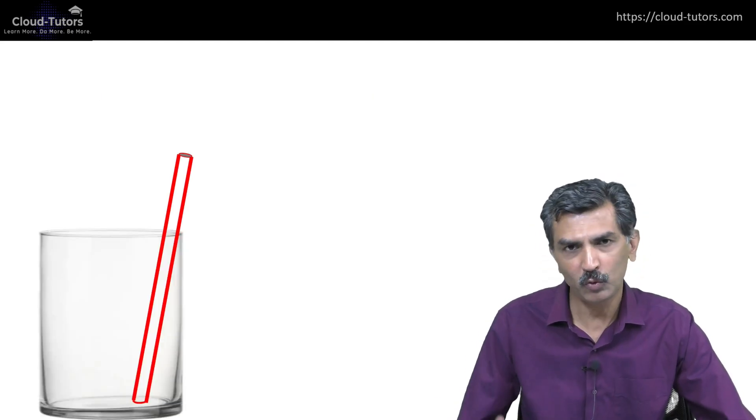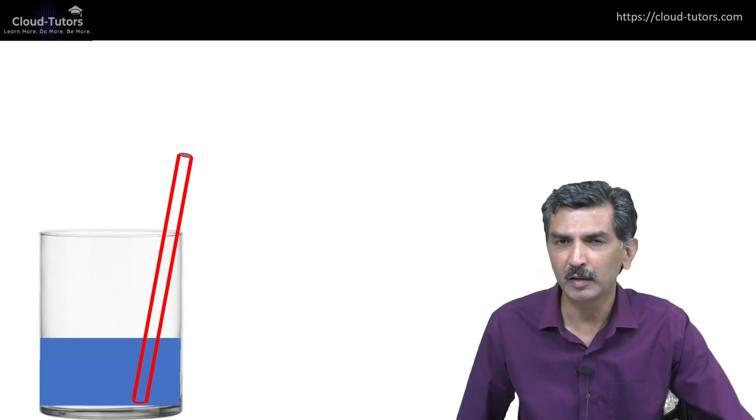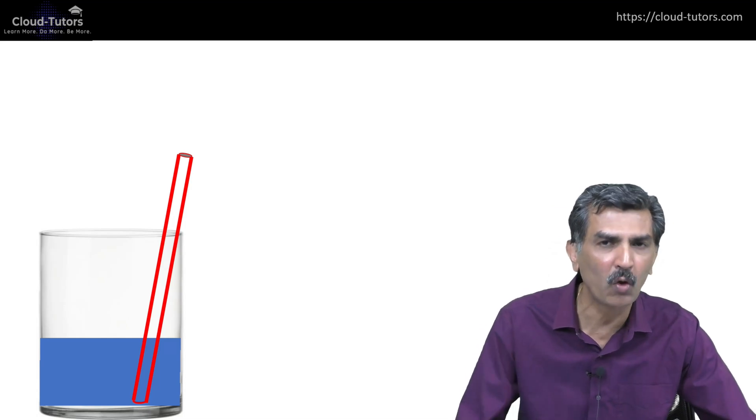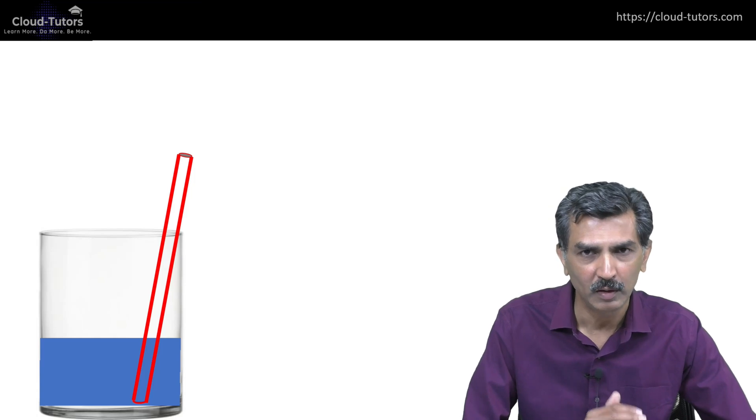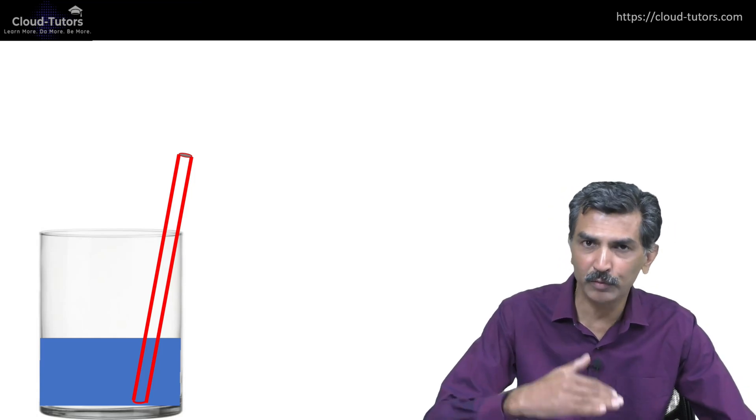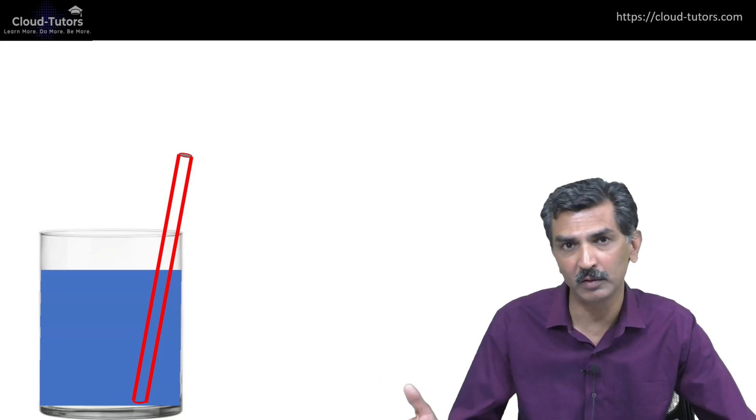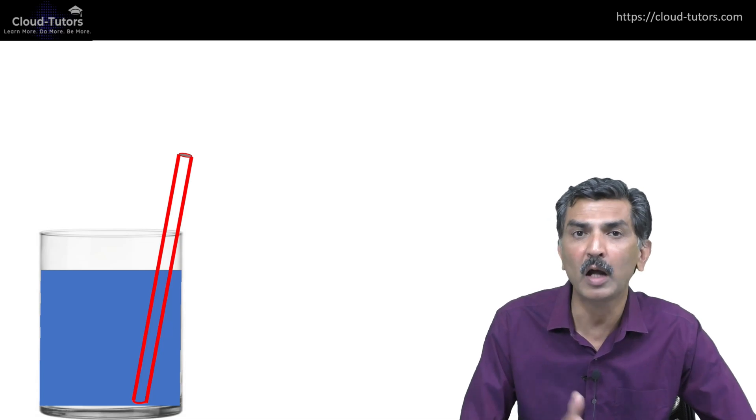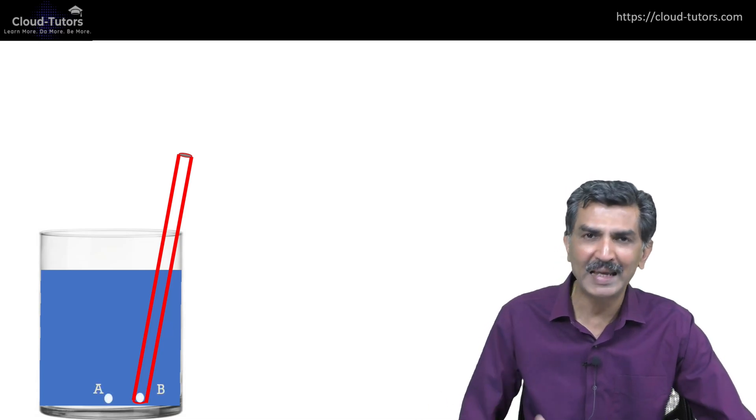If you look at the straw, as you pour a liquid in the cup, you will notice that the level of the liquid in the straw is always the same as the level of the liquid in the cup. They rise together. If I pour more water, you can see that the level of the water in the straw is the same as the level of the water outside the straw.